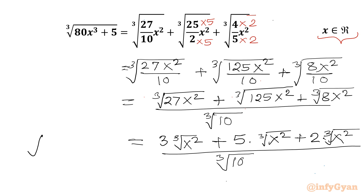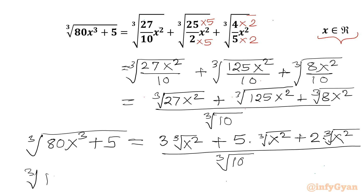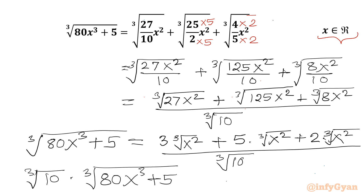LHS is cube root of (80x³ + 5). Now we will multiply both sides by cube root of 10. So on the LHS we have cube root of 10 times cube root of (80x³ + 5), and the RHS will become (3 + 5 + 2), which is 10, times cube root of x².